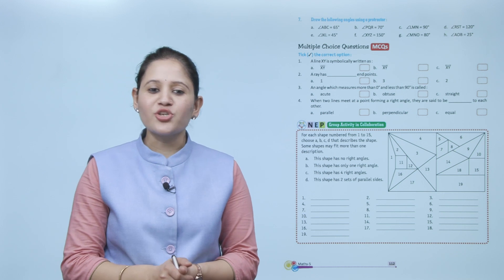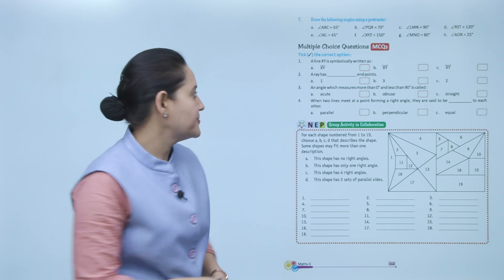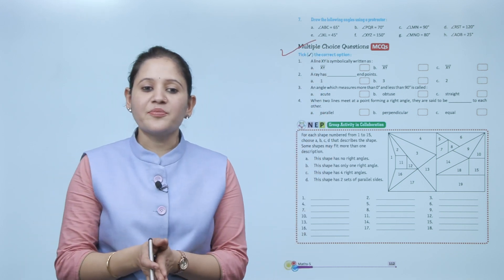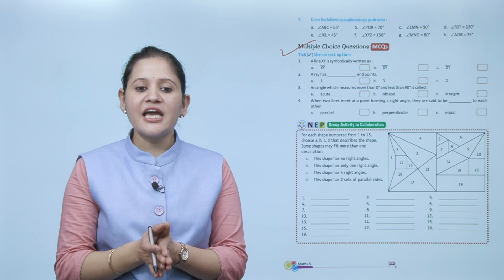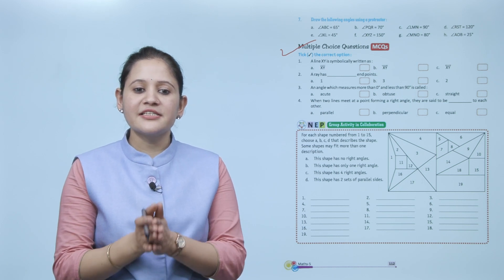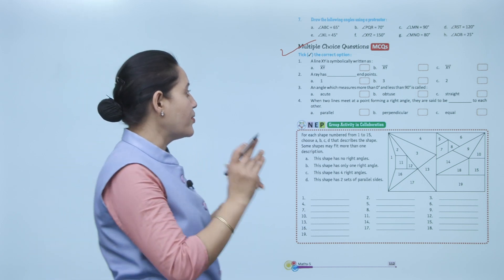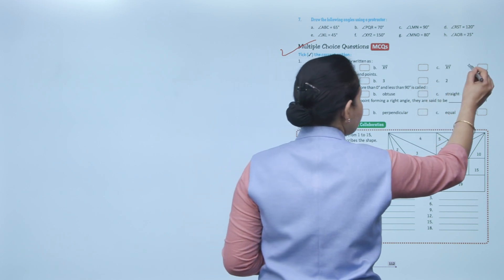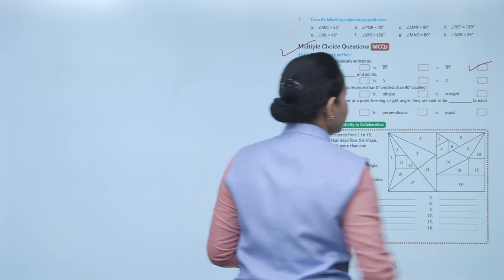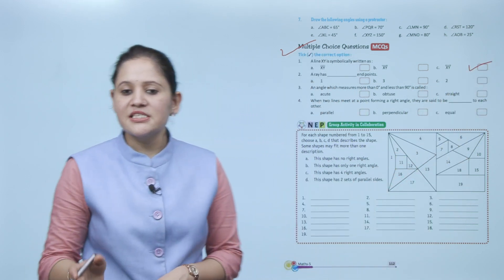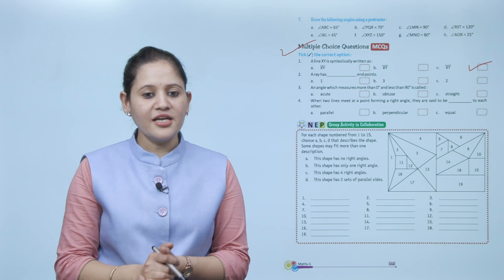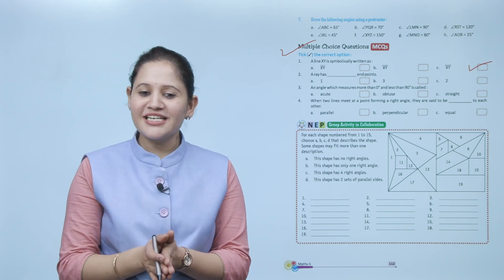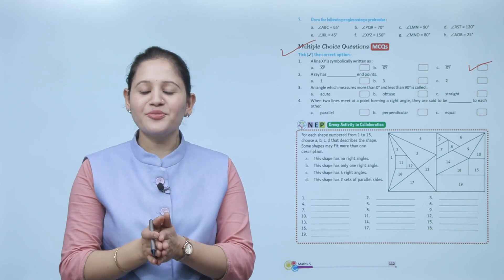Next is multiple choice questions. Take the correct option: a line XY is symbolically written as — both sides should have arrows. So option C is the correct answer — this represents line XY. Here we end the chapter. I hope you understand it well. Now you have to practice it.